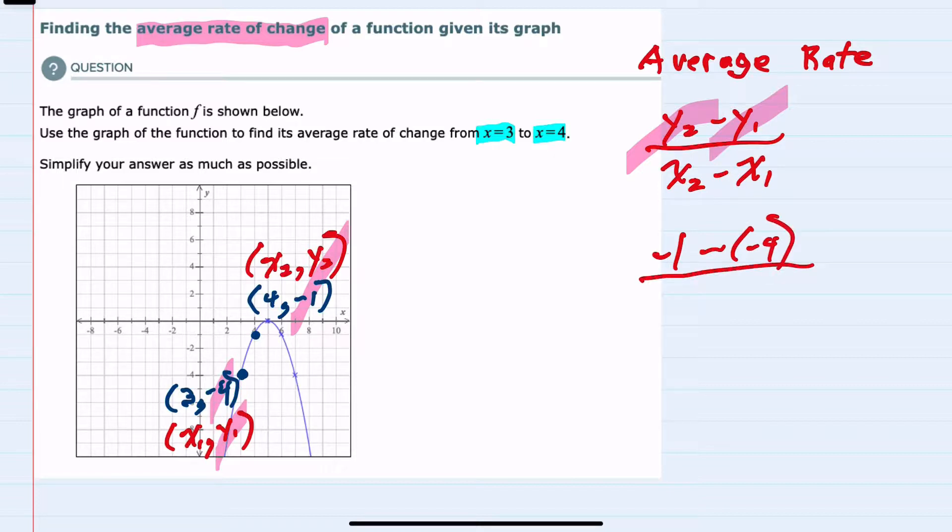In the denominator I would have x2 which here is 4 minus x1 which here is 3.